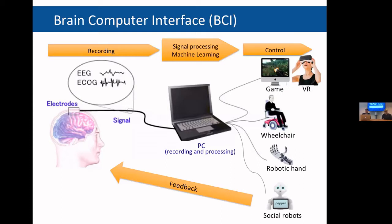These are systems that collect brain recordings from brain imaging tools and use the signals in order to understand what the user is experiencing. That includes what the user's intentions are, what their emotional status is, and whether they have a certain cognitive state such as fatigue or high attention level.